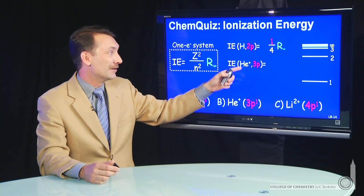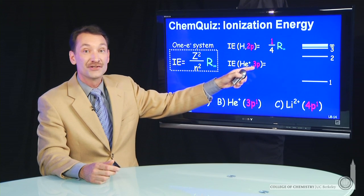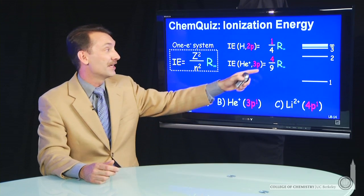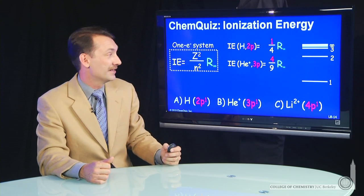For the helium, now z is plus 2 and n is 3. We can plug those in 4 ninths of a Rydberg, a little less than half a Rydberg to ionize.